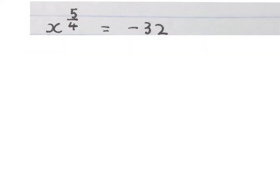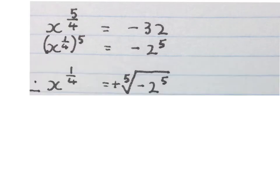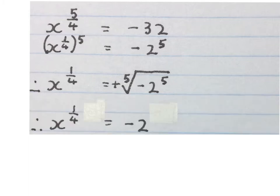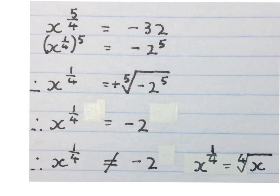The next equation: we write the exponent as a quarter to the power of 5, and prime factorize 32 on the right side. To get rid of the 5, we do the fifth root on both sides. We get x to the power of a quarter equals minus 2. But x to the power of a quarter is not allowed to be minus 2, so we stop — there is no solution here. Remember, x to the power of a quarter is the same as the fourth root of x, and an even root can't have a negative answer.